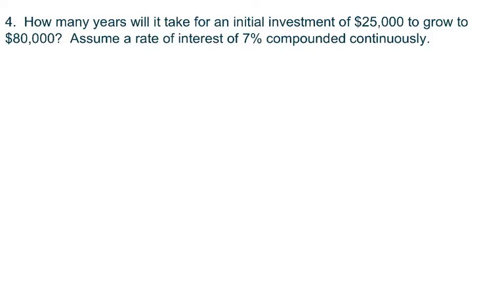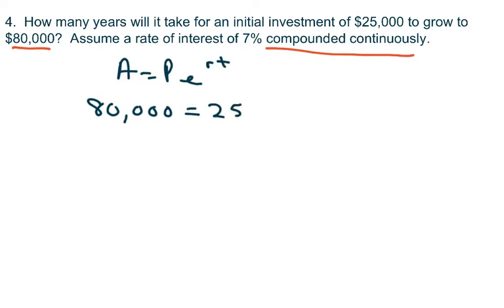Okay. And another one. We have 25,000 and we want it to grow to 80,000. And it's compounded continuously. So we're going to use the A equals Pe^rt, the continuously compounded formula. So the final amount we want to be 80,000. Our principal amount is 25,000. Our rate is 0.07 times t. We're looking for t. Divide both sides by 25,000 and you get 3.2 equals e^0.07t. Take ln of both sides.